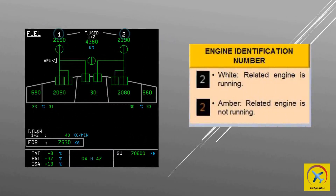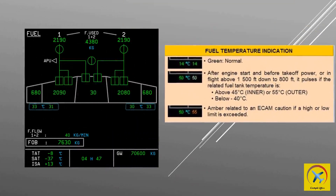Engine identification number in white means the related engine is running; in amber means the related engine is not running. Fuel temperature indication for inner and outer tanks is green when normal. After engine start and before take-off power, or in flight above 1500 feet down to 800 feet, it pulses if the related fuel tank temperature is above 45°C for inner tanks or 55°C for outer tanks, or if it reaches below -40°C. If the fuel temperature indication changes to amber, it is related to an ACAM caution if a high or low limit is exceeded.